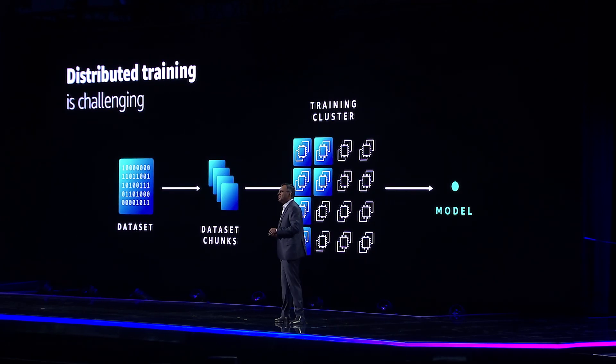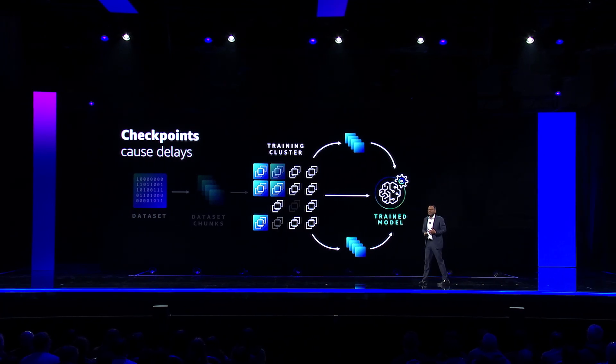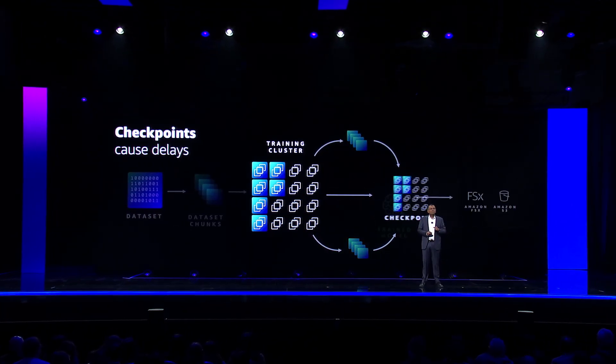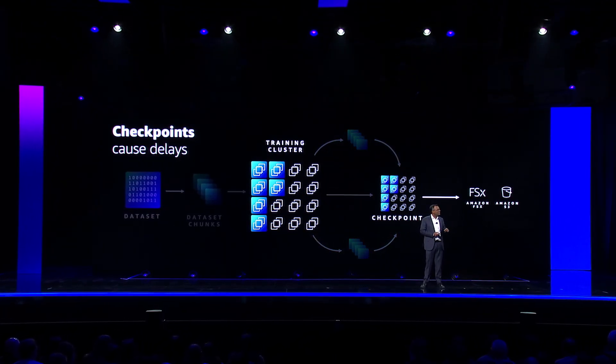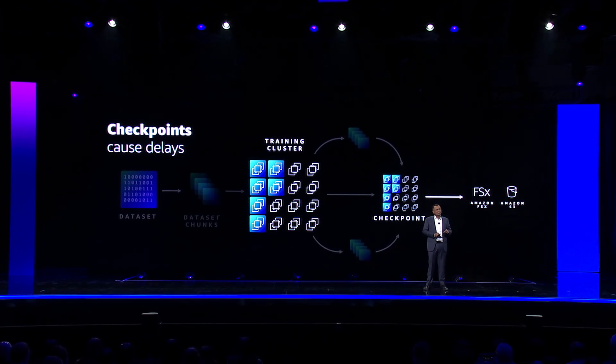That means you have to write a lot of code and optimize it frequently. In addition, customers need to frequently pause and inspect the model performance, and optimize the code if something is not working right. To do this, they had to manually take checkpoints of the model state, so that training is able to resume without any loss in progress.